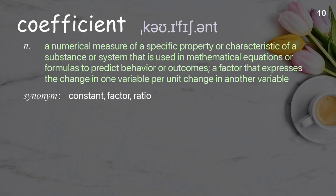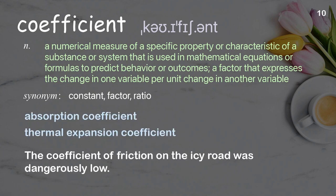Coefficient. A numerical measure of a specific property or characteristic of a substance or system that is used in mathematical equations or formulas to predict behavior or outcomes. A factor that expresses the change in one variable per unit change in another variable. Examples: absorption coefficient, thermal expansion coefficient. The coefficient of friction on the icy road was dangerously low.